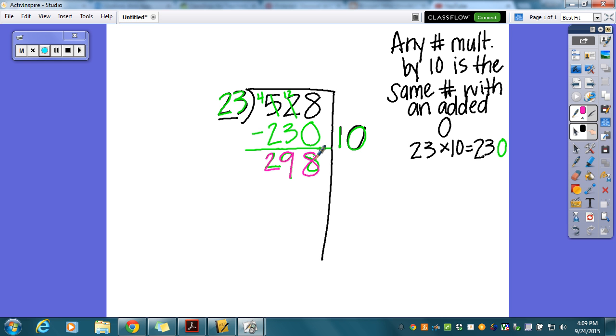I can see that I can do another multiple of 10. Again, 23 times 10 is 230. Now, 8 take away 0 is 8. 9 take away 3 is 6. And 2 take away 2 is 0. Now I've got 68.